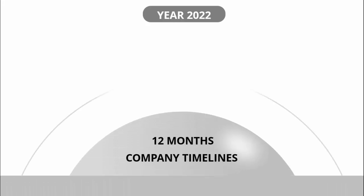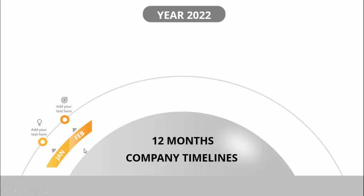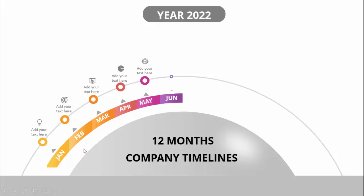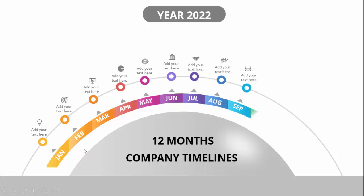In today's tutorial I'm going to show you how to create a 12-month company timeline slide in PowerPoint. When I click it will show you the 12-month company timeline. Clicking through shows the first one, which is Jan, and you can add detailed text along with an icon. Then clicking shows the next one: Feb, March, April, May, all the way through to December.